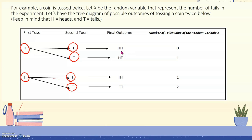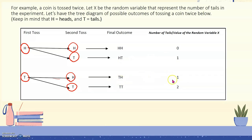It is 0 when the final outcome is heads and heads, because there are no tails, so the number of tails is 0. It can also be 1 if the final outcome is heads and tails. It can also be 1 if the final outcome is tails and heads. And it can also be 2 if the final outcome is tails and tails.